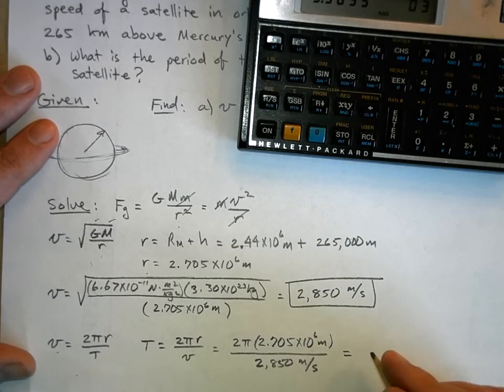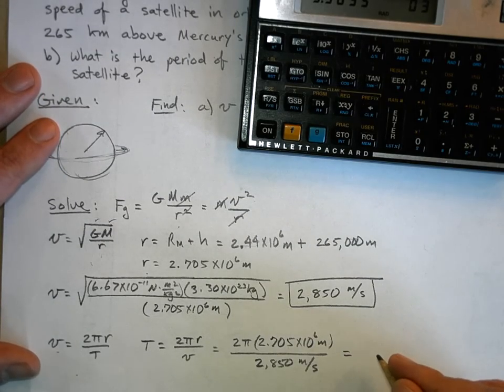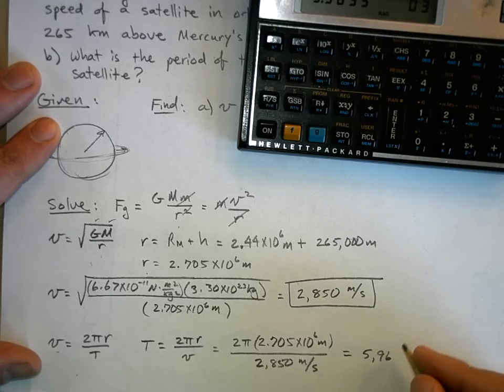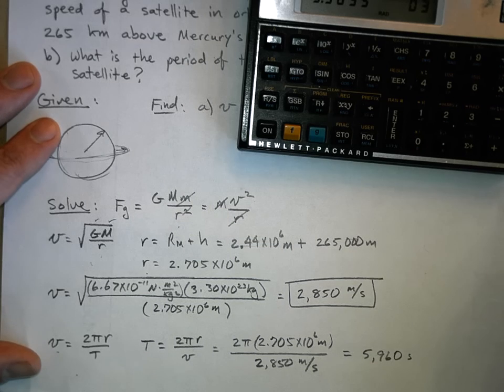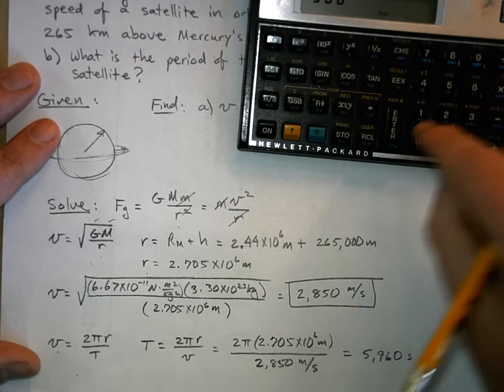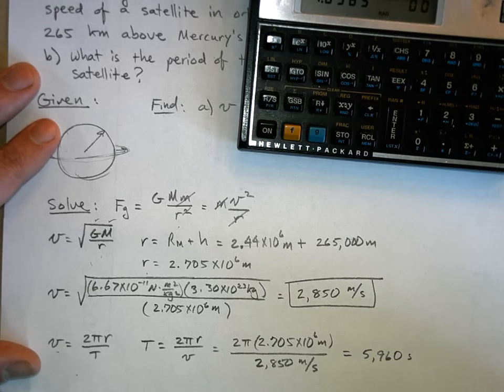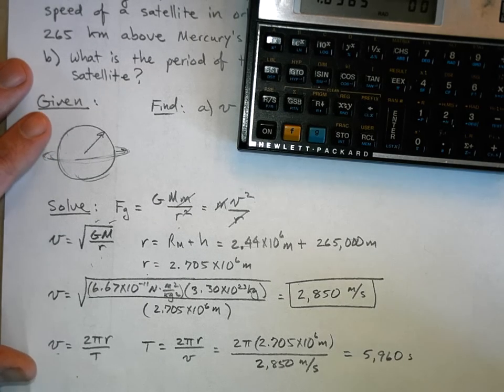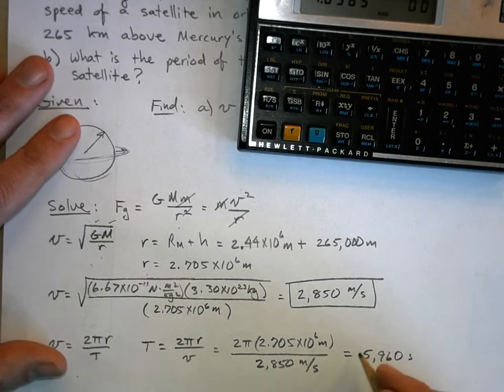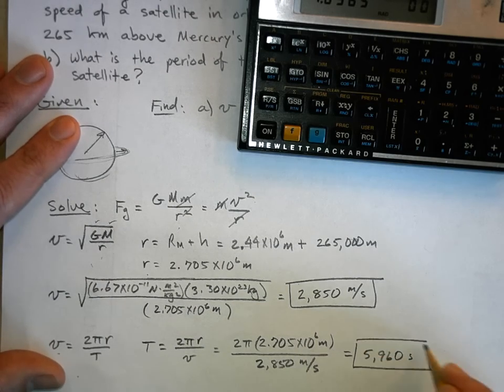Let's see, 2 pi times 2.705 times 10 to the 6, times 2,850 divided. We've got quite a long time. Did you get 5,960 if I round off to three significant figures, seconds? And just for fun, I'm going to divide that by 3,600 to figure out how many hours. So it's about 1.65 hours. But we'll just leave it in seconds.